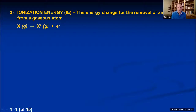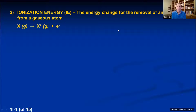The reason the definition specifies a gaseous atom is that if the element were in its solid state and you applied energy, the first energy absorbed would melt it, then more would boil it, and only excess energy after that would pull the electron off. We never want to include the energy to melt and boil when measuring ionization energy, so by definition we always start with a gaseous atom.